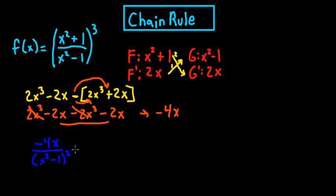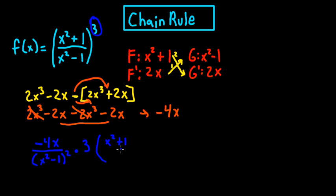Now what you have to do is multiply it by the exponent, so it's going to be multiplied by 3, times x squared plus 1 over x squared minus 1. And remember, you're going to drop that number, so 3 minus 1 is 2 — that's going to become 2.